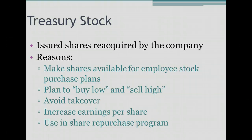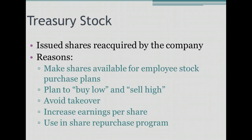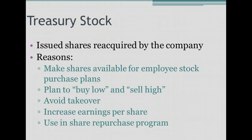As you will learn, the denominator in the earnings per share formula is common stock outstanding — the number of shares of common stock outstanding. That number is affected by treasury stock, since shares outstanding are the shares in the hands of shareholders. When we buy treasury stock, we reduce the number of shares outstanding, thereby increasing earnings per share.